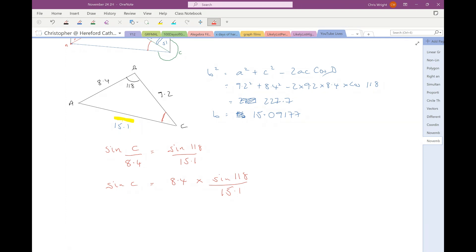I'm going to work out 8.4 multiplied by sine 118 over 51. So, that gives me sine C equals 0.49, again, keeping the whole number on my calculator, I'm going to inverse sine that to tell me that the angle C is 29.44 to two decimal places. So, now.